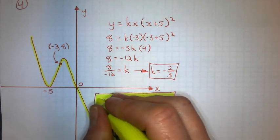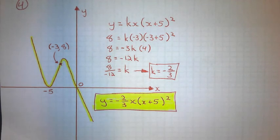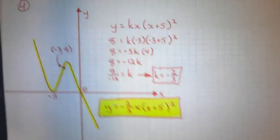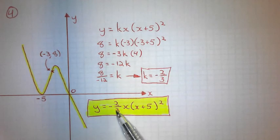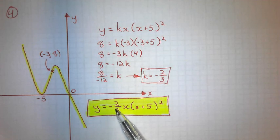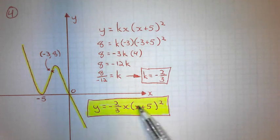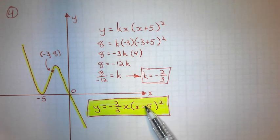Looking at the final equation, we can read off the graph's properties directly from its parts: the negative coefficient tells us it's down-up-down; the standalone x factor tells us it goes through zero; and the (x + 5) factor tells us it goes through negative five on the x-axis.